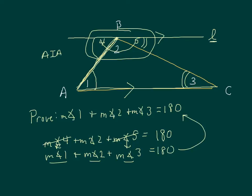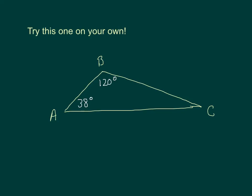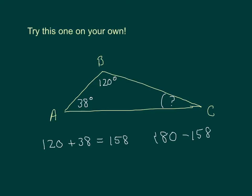That's a quick informal proof of why this theorem is true. Now try this problem: given two of the three angles of a triangle, find the measure of angle C. Angle B is 120 degrees and angle A is 38 degrees, giving us 158 degrees between the two. Subtracting from 180, we get 180 minus 158 equals 22 degrees. So the measure of angle C is 22 degrees.